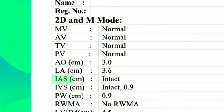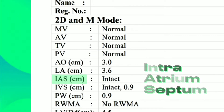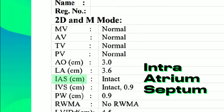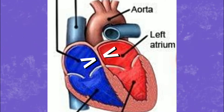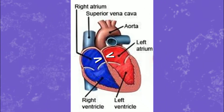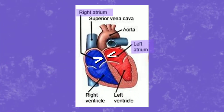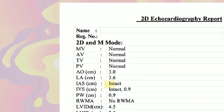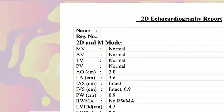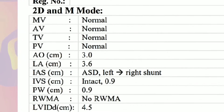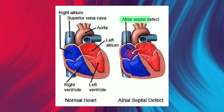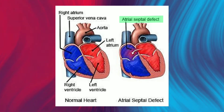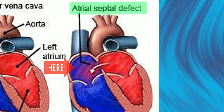Next is IAS, which means intra-atrial septum. It is a wall between the upper two chambers of the heart — the left and right atrium. 'Intact' means the wall is normal, and the abnormality is ASD — atrial septal defect — commonly known as a hole in the heart.